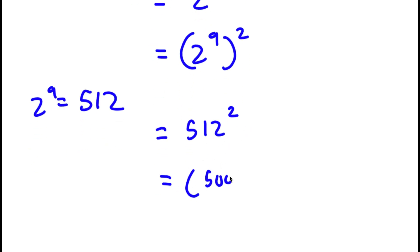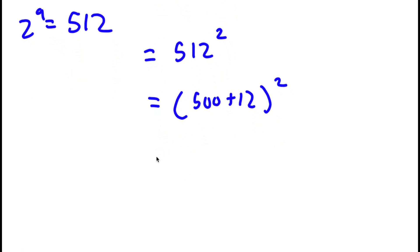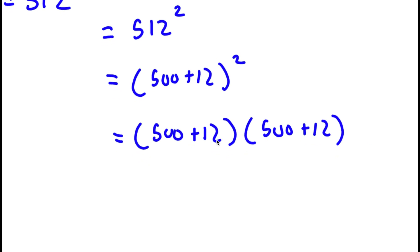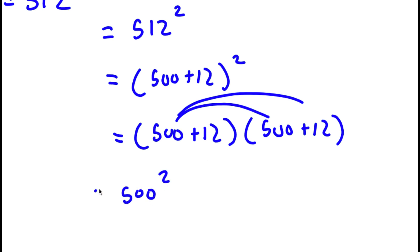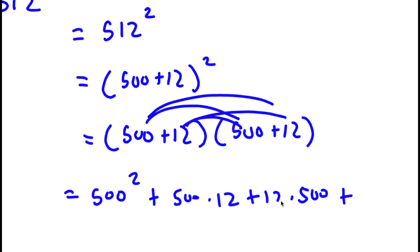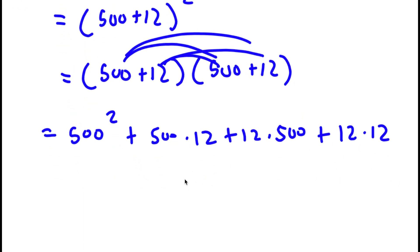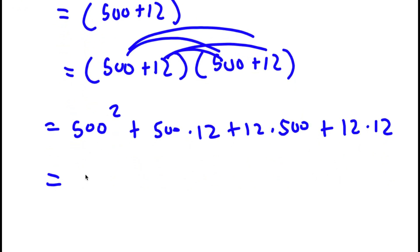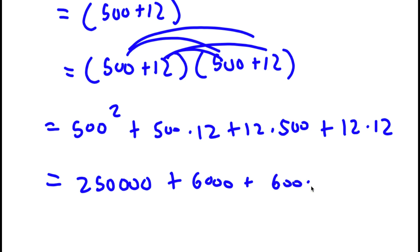Now 512 to the power of 2, I can write as (500 plus 12) to the power of 2, which is the same thing as (500 plus 12) times (500 plus 12). To solve this, I'm going to first start by distributing 500: 500 times 500, which is 500 squared, plus 500 times 12. Then distributing the 12: 12 times 500, plus 12 times 12.